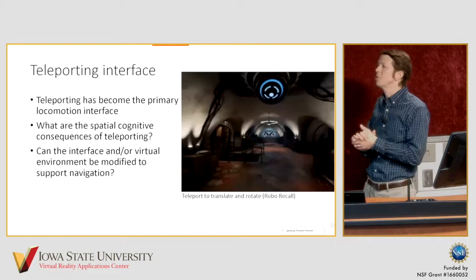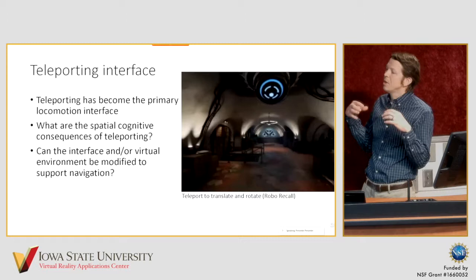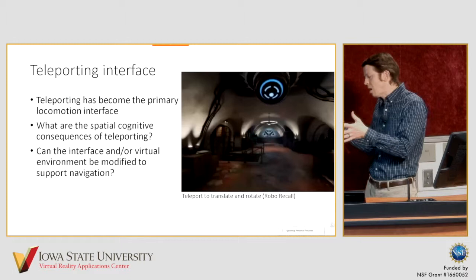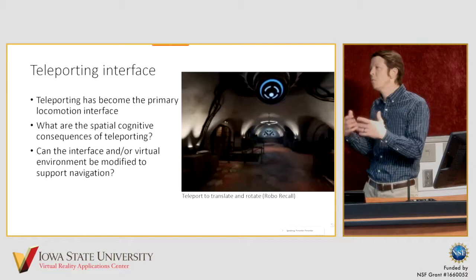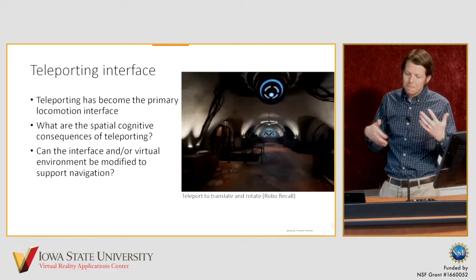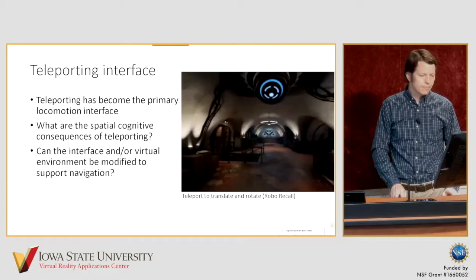The project I'll be telling you about asks: what are the spatial cognitive consequences of teleporting? If people have trouble pointing back to the path origin in the imagined example, is that also true when people teleport? Does it lead to problems in learning a new spatial environment? And not only cataloging the problems, but what are some potential solutions? Teleporting seems effective at reducing cyber sickness — what can we do to support it as a locomotion tool that allows for more natural spatial navigation?